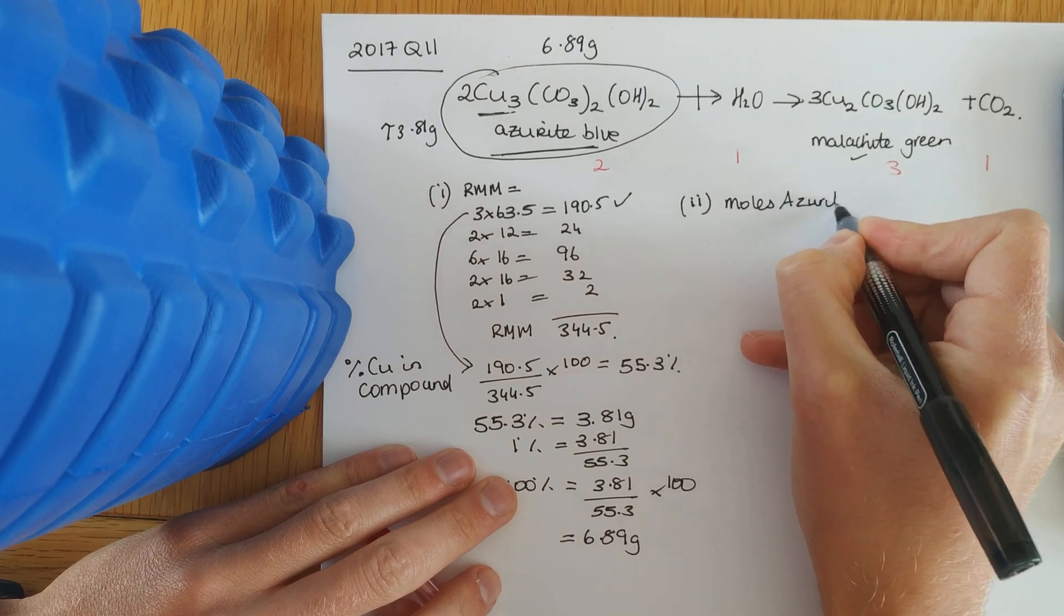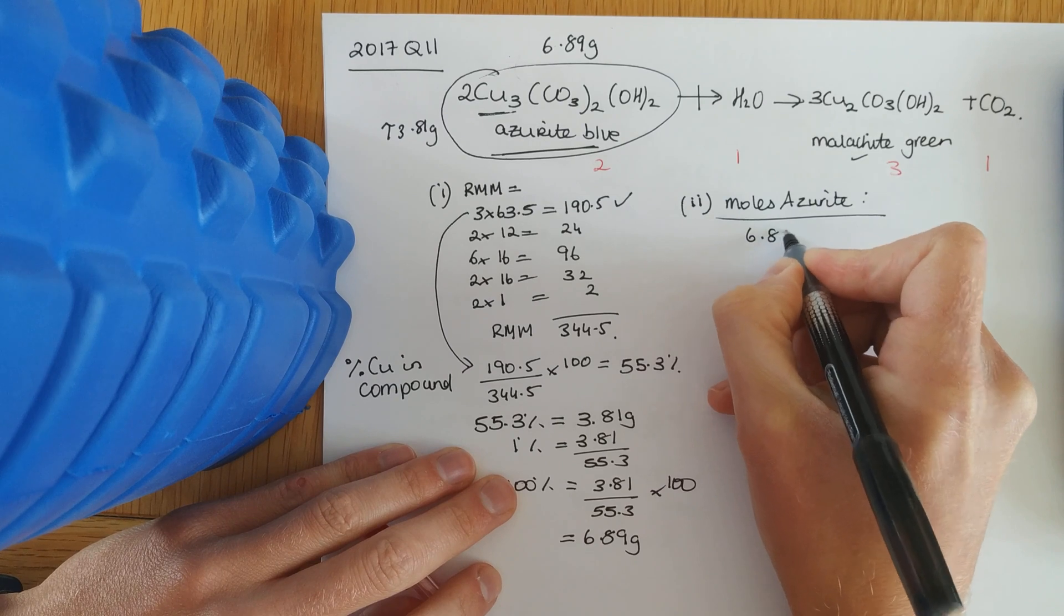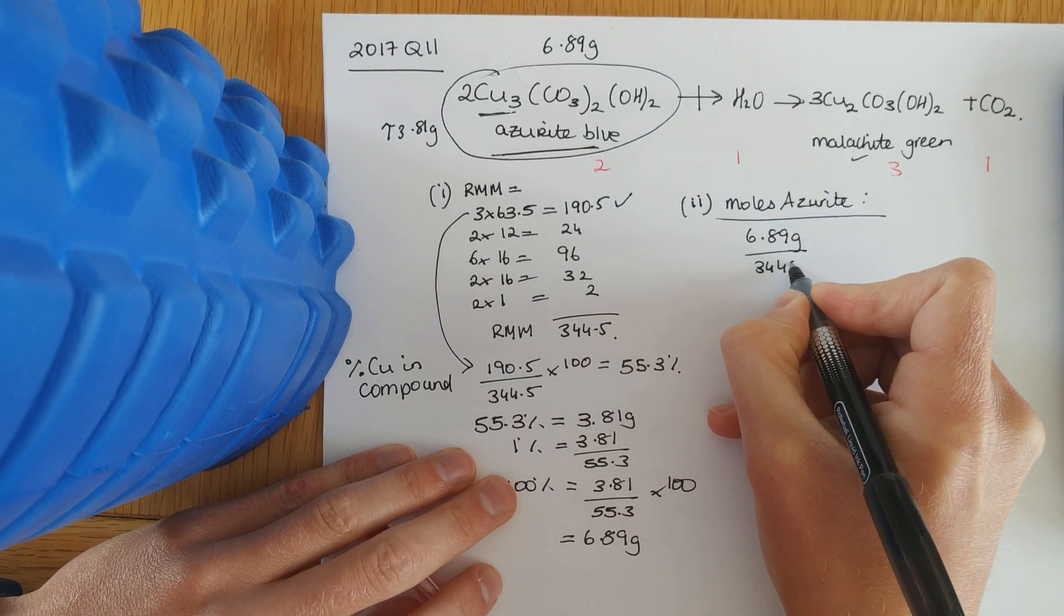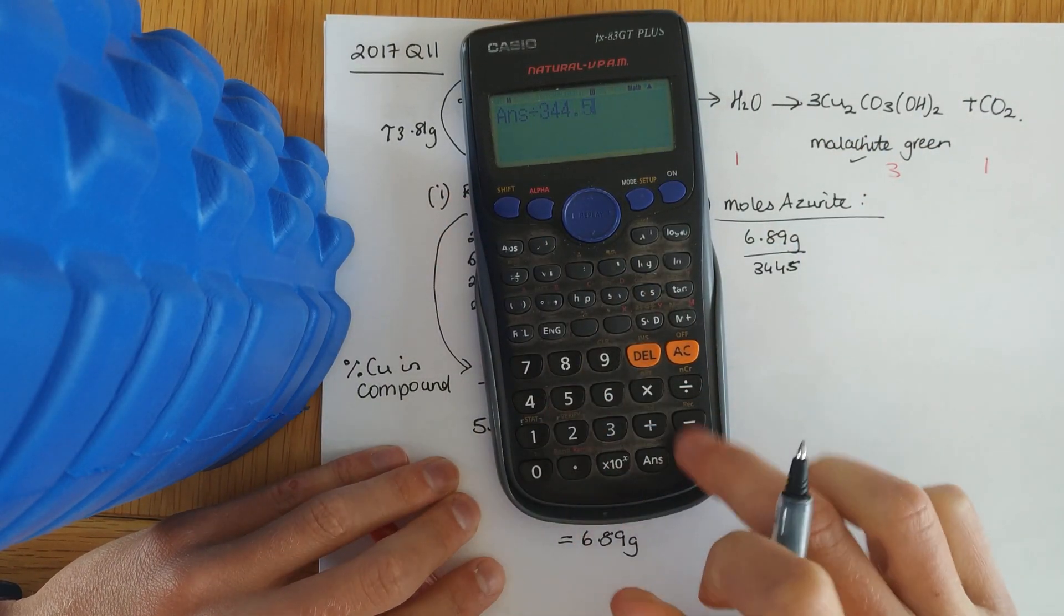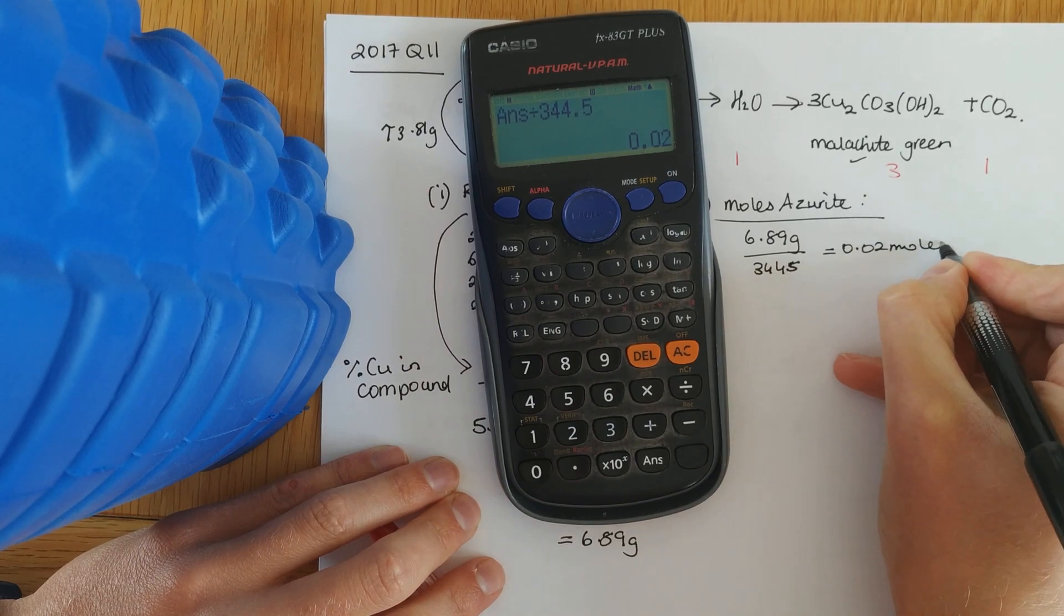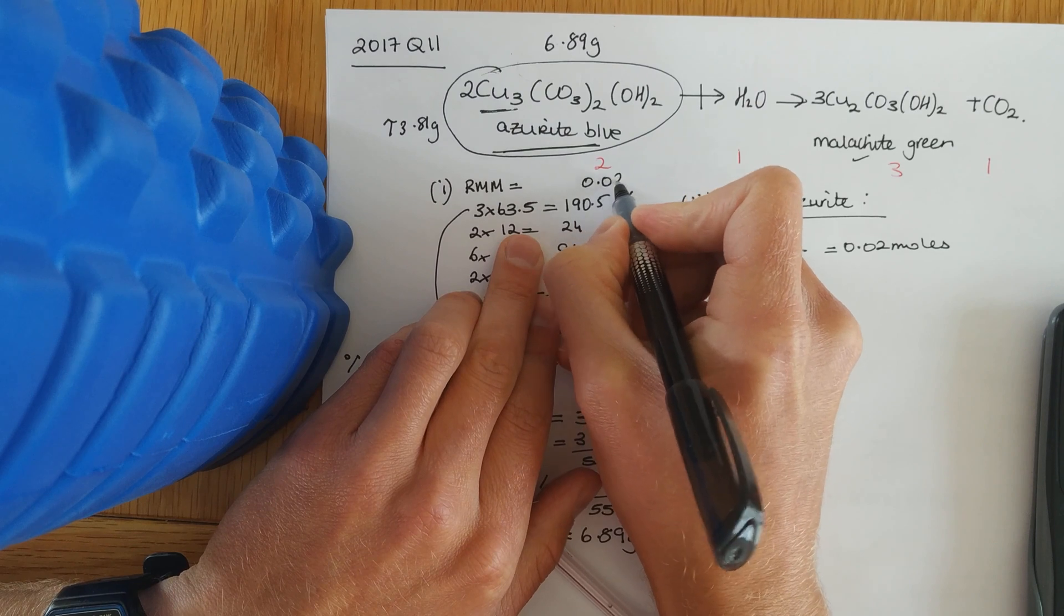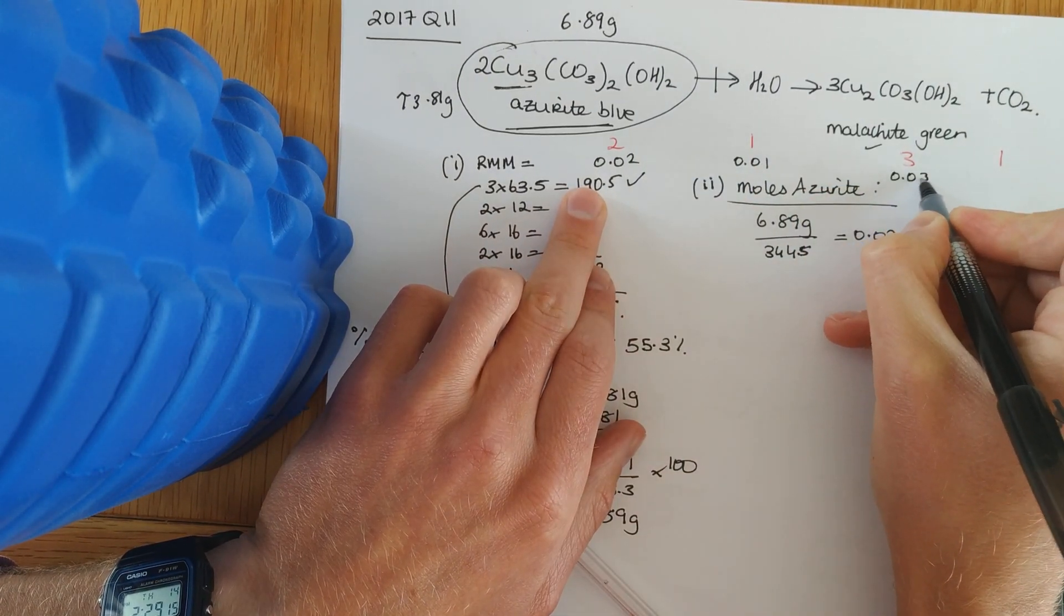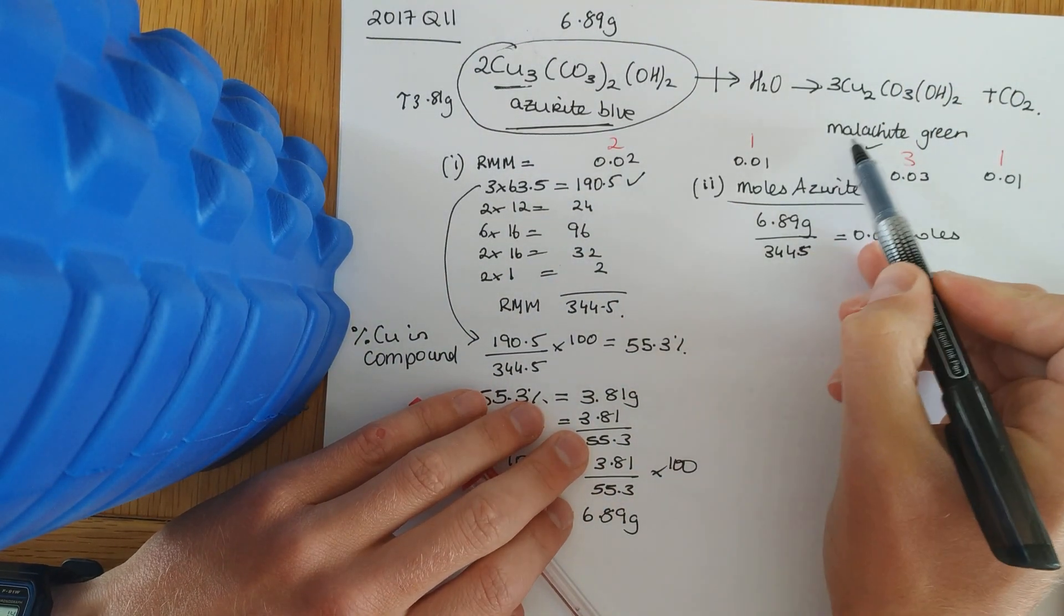They'll always give you some sort of information that we can go back to moles. So, 6.89 grams over the relative molecular mass, which you worked out there, 344.5. And I get 0.02 moles. Throw that back in to our equation. So, there's 0.02 moles of this. There's 0.01, 0.03, 0.01. Now, they've asked you for the maximum amount of this.